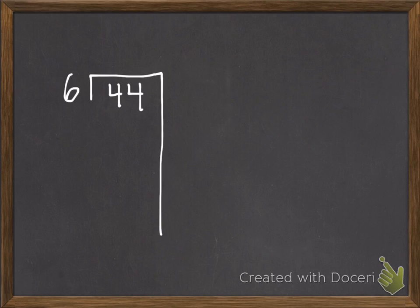So if I didn't know how many sixes were in 44, I could take something like, I know there's at least 5, because 5 times 6 is 30. So I can take out 5 sixes. I'm going to write it here on the side. So if I take out 5 sixes, that's going to be 30 that I've taken out, or 5 times 6.